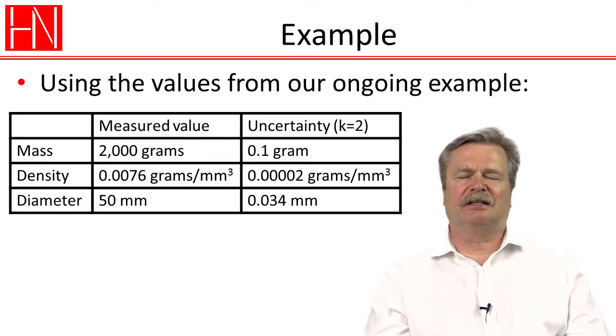The mass we measured is 2,000 grams, so 2 kilograms. And the uncertainty of the mass measurement at an expanded uncertainty level with k equal to 2 is 0.1 grams. We measured the density to 0.0076 grams per cubic millimeter, with an uncertainty of 0.00002 grams per cubic millimeter.